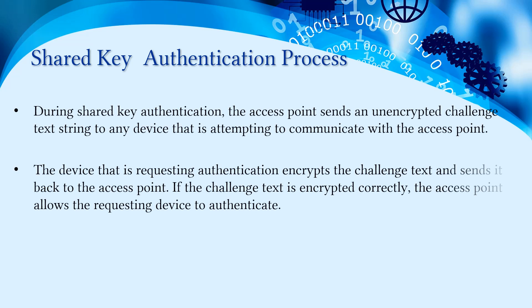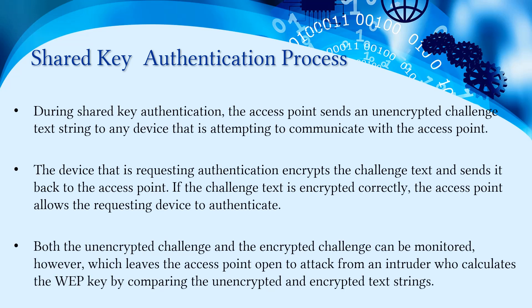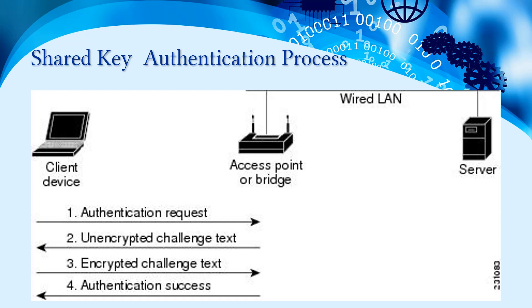In the shared key authentication process, the access point sends an unencrypted challenge text string to any device attempting to communicate with it. The requesting device encrypts the challenge text and sends it back to the access point. If the challenge text is encrypted correctly, the access point allows the device to authenticate. However, both the unencrypted challenge and the encrypted challenge can be monitored, leaving the access point open to attack from intruders who calculate the WEP key by comparing the two text strings.